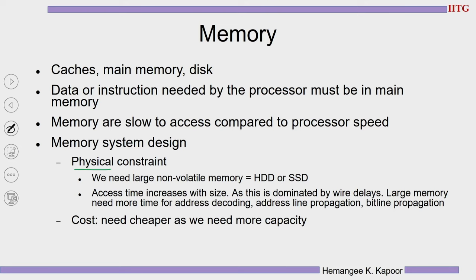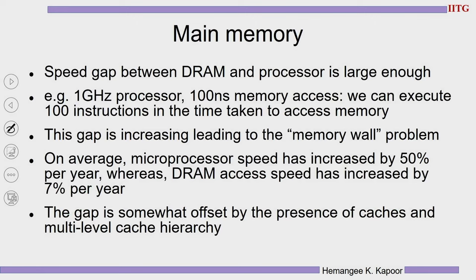From disk, data is brought into main memory. Main memory size is increasing, however it is much slower to access compared to processor speed. The reason is the size of the memory — the more addresses and data stored, the higher the wire delays required to fetch data. We see physical constraints: non-volatile memory is needed for permanent storage, and access time increases with size. We manage this delay using caches, which help bridge the latency gap.